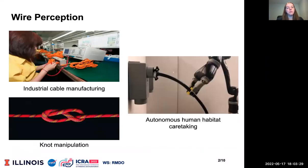Wires are ubiquitous deformable objects. Perceiving these objects enables robots to interact with them in challenging manipulation scenarios, like industrial wire assembly, knot untying, and autonomous human habitat caretaking.